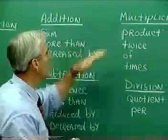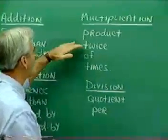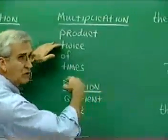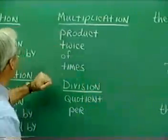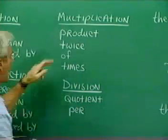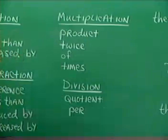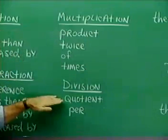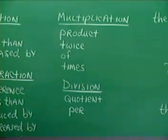Multiplication crops up when the word product is used, or twice an amount means two times the amount. Times, like this times that means to multiply, of often means times as well. Division is indicated when the word quotient is used, or when the word per is used in a problem.